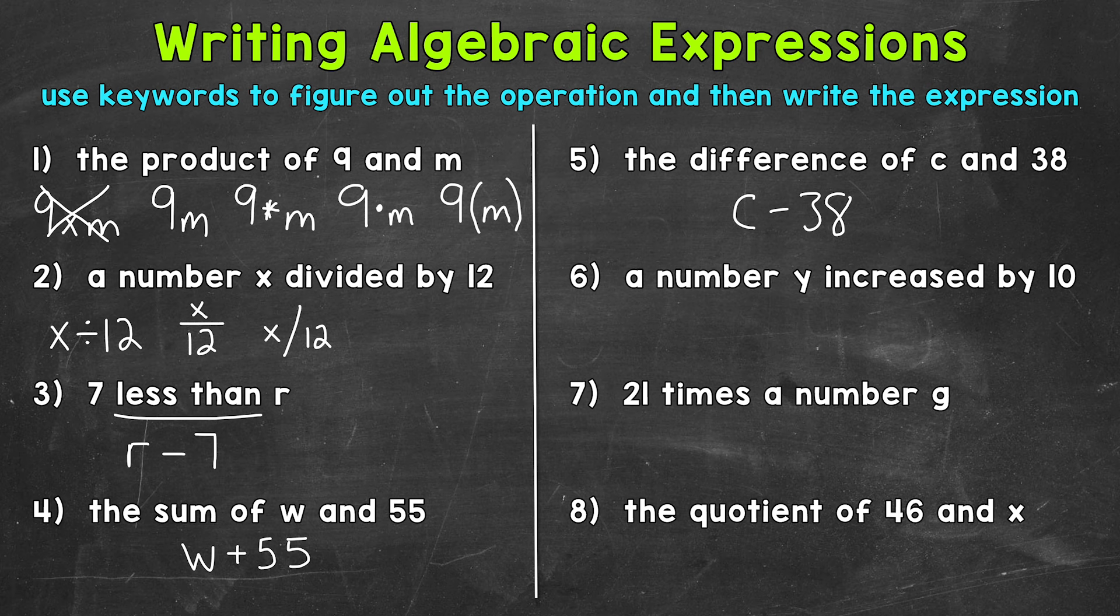Number six, we have a number Y increased by 10. Increased is our keyword. That means that we are going to use addition. So Y plus 10. On to number seven, 21 times a number G. So multiplication. So let's use a number next to our variable. Remember, that represents multiplication. So 21G represents 21 times G.